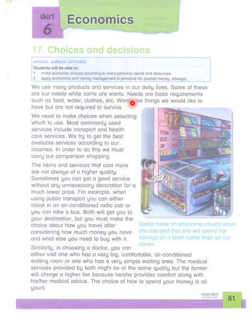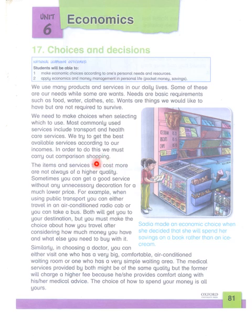So needs are basic requirements such as food, water, clothes, etc. Wants are things we would like to have but are not required to survive. We need to make choices when selecting which to use. Most commonly used services include transport and healthcare services. We try to get the best available services according to our incomes. In order to do this, we must carry out comparison shopping.